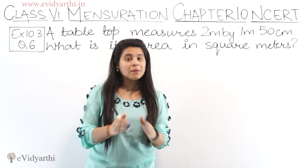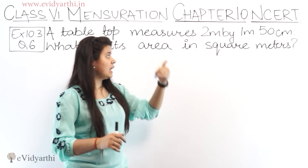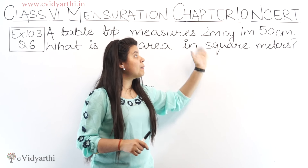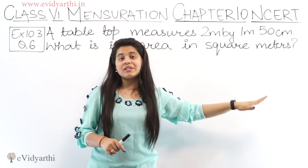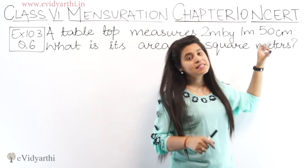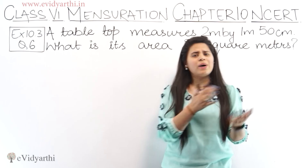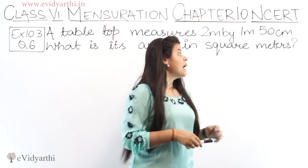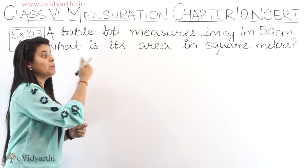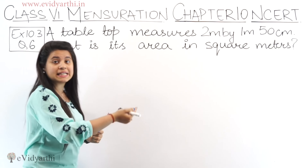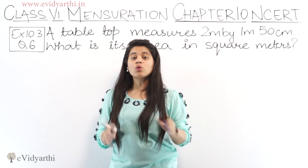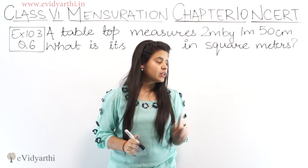We have a table top with the measures given — length and breadth: 2 meters by 1 meter 50 centimeters. One value is in meters and one is given in both meters and centimeters. So first we need to convert them to the same unit.